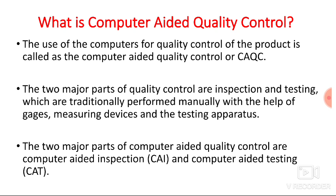The two major parts of quality control are inspection and testing. After manufacturing the product, it has to be inspected first — you check various dimensions and other parameters — and then it has to be tested. Traditionally, the inspection and testing are performed manually with the help of gauges, measuring devices, and testing apparatus, like go/no-go gauges, slip gauges, thread gauges, screw gauges, and vernier calipers. The major parts of computer-aided quality control are computer-aided inspection and computer-aided testing.